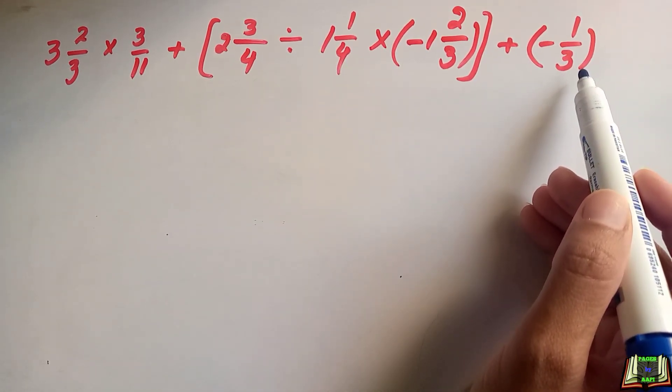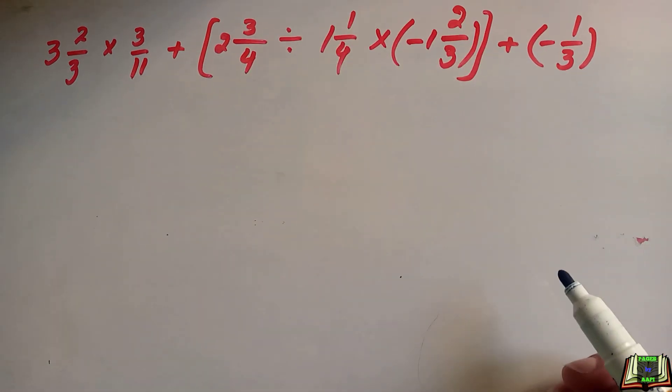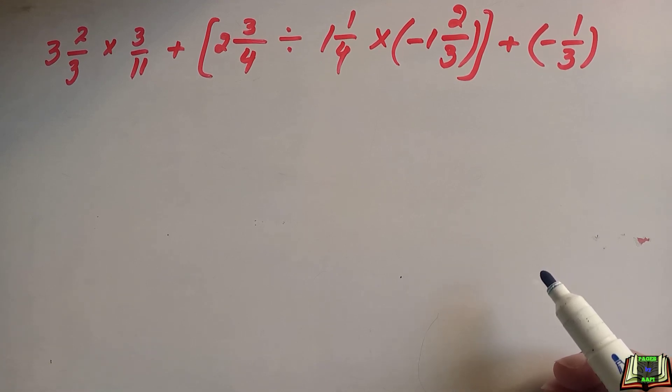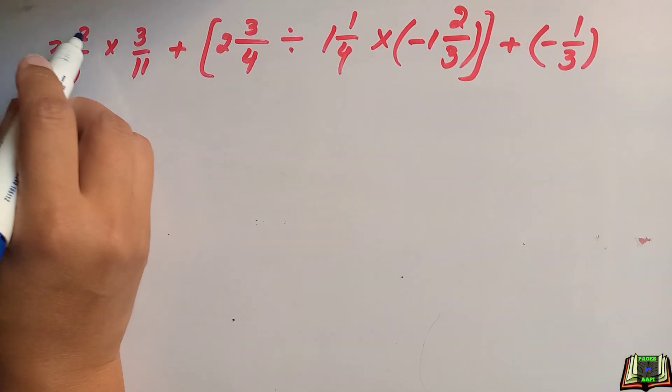The very first thing that we will do in this question is convert the mixed fractions into proper or improper fractions. To convert, we will multiply the denominator with the whole number and then add the numerator.